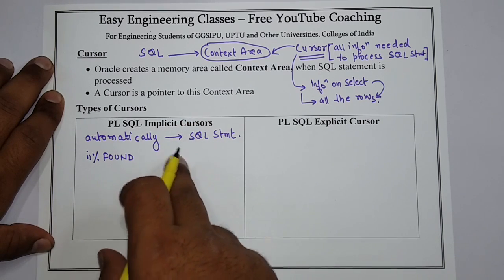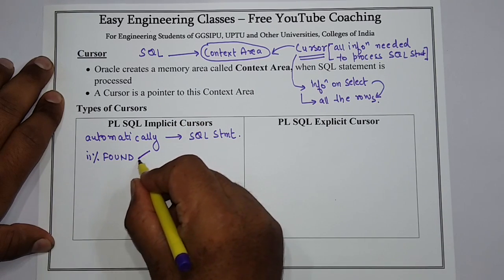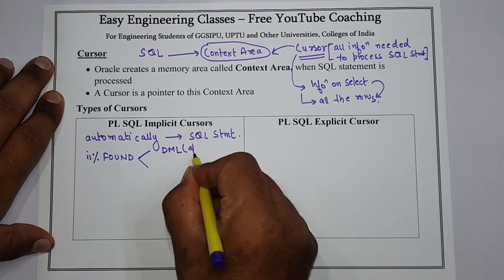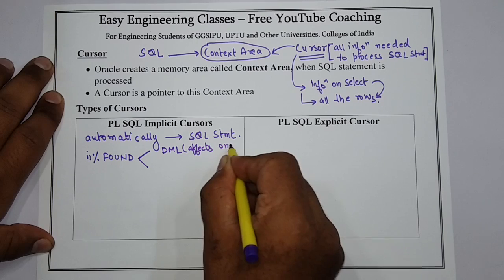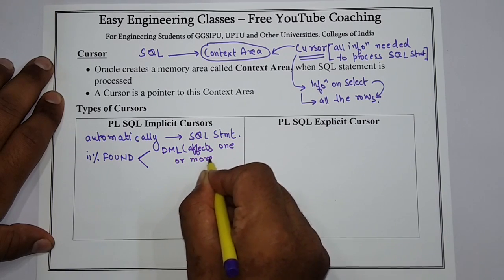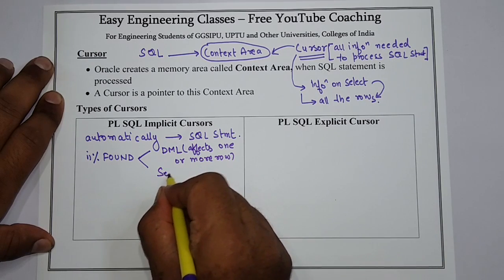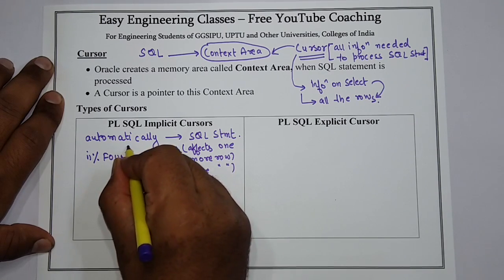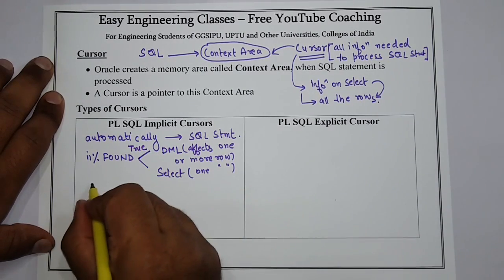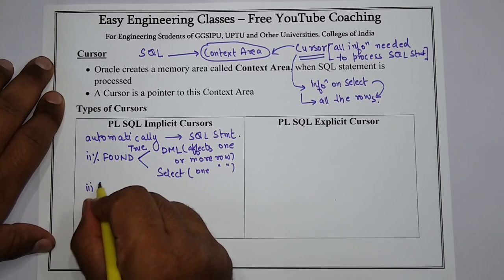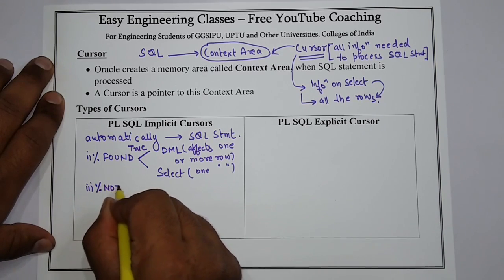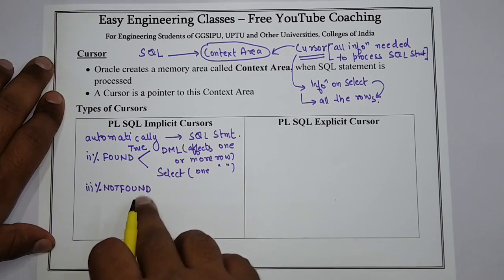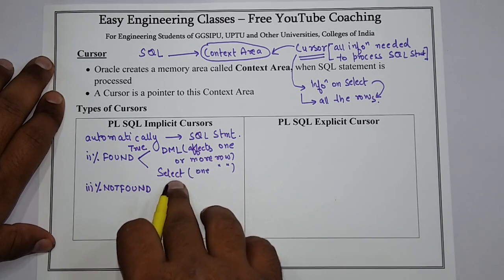Or if a SELECT statement returns one or more rows, then %FOUND returns true. The second is %NOTFOUND, which is exactly the opposite — it returns true if no rows are affected by DML, or no row is returned by SELECT.